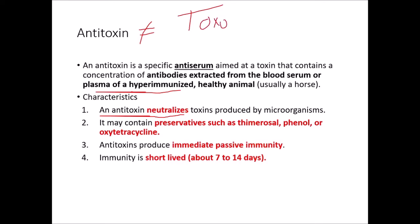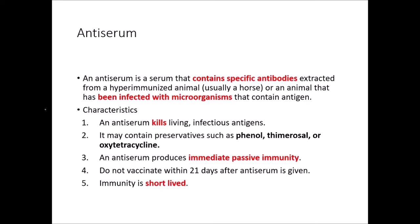Antiserum is a serum that contains specific antibodies extracted from a hyper-immunized animal, usually a horse, or an animal that has been infected with microorganisms that contain the antigen. An antiserum kills living infectious antigens. It usually contains preservatives such as phenol, thimerosal, or oxytetracycline, and it produces immediate passive immunity. We do not want to vaccinate within 21 days after an antiserum is given, and immunity is short-lived. This is passive immunity, which means we're not developing our own immune system against this disease. When we use plasma transfer between patients who have been sick with coronavirus and developed the antibodies, to a sick patient — that is passive immunity to that sick patient. Their immune system is so depressed that they probably aren't going to develop their own immunity.